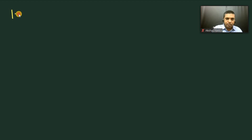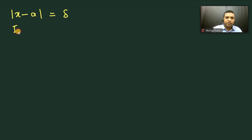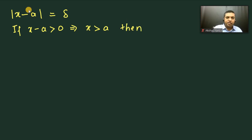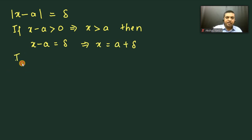Consider modulus of x minus a equal to delta. From the definition of modulus, we can have two conditions. If x minus a is positive, which means x is greater than a, then modulus of a positive number is the number itself. So we get x minus a equal to delta, which means x is equal to a plus delta.